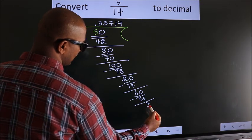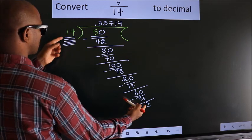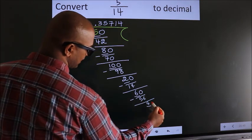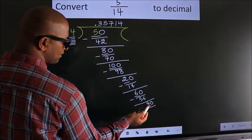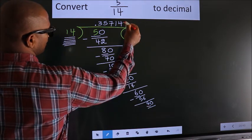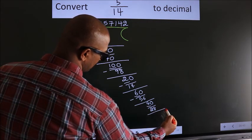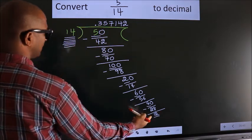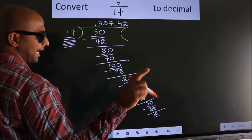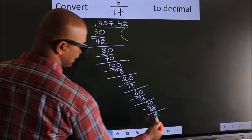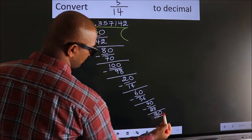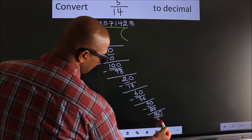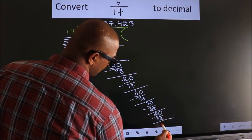We subtract to get 4. We have 4 here; 4 is smaller than 14, so we take 0 to get 40. A number close to 40 in the 14 table is 14 twos, which is 28. We subtract to get 12. We have 12 here; 12 is smaller than 14, so we take 0 to get 120. A number close to 120 in the 14 table is 14 eights, which is 112. We subtract to get 8.